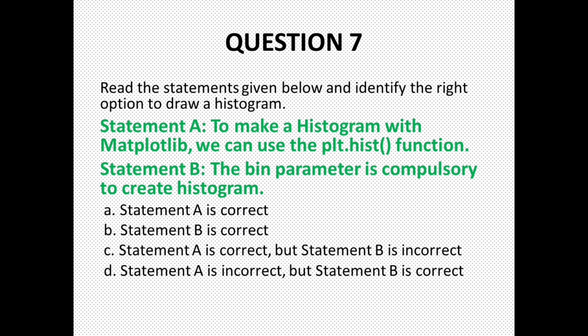Next is an assertion type MCQ where two statements are given and you must identify which is correct. Statement A: to make a histogram with matplotlib, we can use the plot.hist function — this statement is correct. We can plot a histogram using the kind argument or the hist function. Statement B: the bin parameter is compulsory to create a histogram — this is incorrect. We can create a histogram without using bin; its default value is 10. Bin refers to the number of intervals the data is divided into. The correct option is C: statement A is correct but statement B is incorrect.